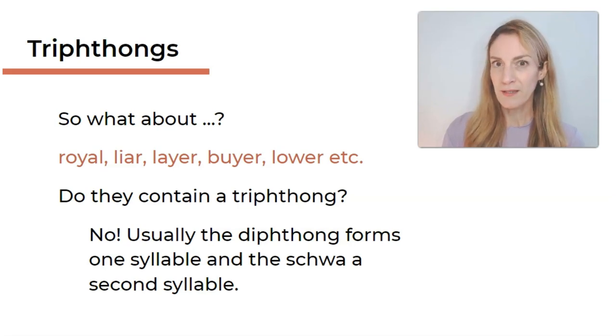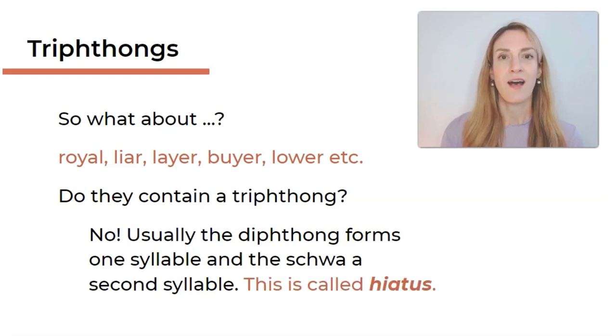So don't get muddled up here. I know this can be a bit confusing. So whenever we have this pattern where we have a diphthong in one syllable and then the following syllable contains a schwa, we also call this hiatus. And actually, the word hiatus contains an aɪ, a diphthong, and then a schwa. Hiatus. So you can maybe remember it this way.